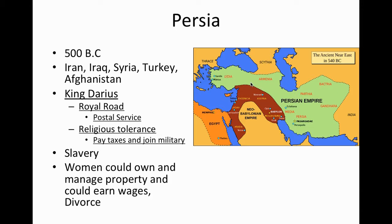King Darius also created the first postal service. Along this road, messengers would be passed from district to region to region to allow for better political communication and even military communication. He's also known for religious tolerance, which was pretty unique back then. The Persians believed in a single god at times, and so they were okay with any type of religion, whether it was polytheism or monotheism. However, if you did practice another religion, you did have to pay taxes and join the military. The Persians did have slaves — most of these civilizations had slaves, usually prisoners of war.